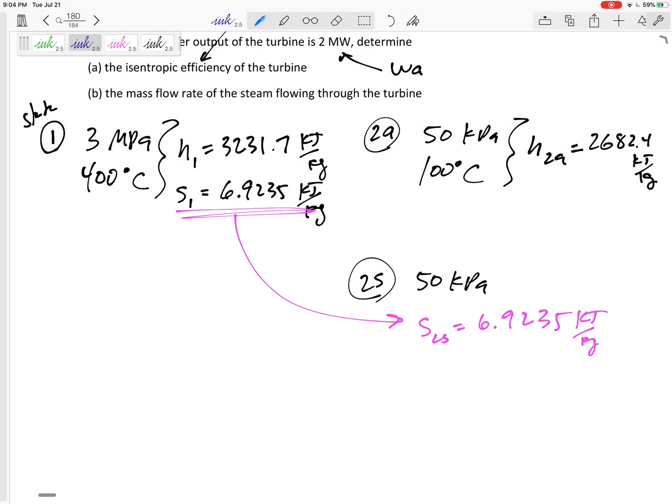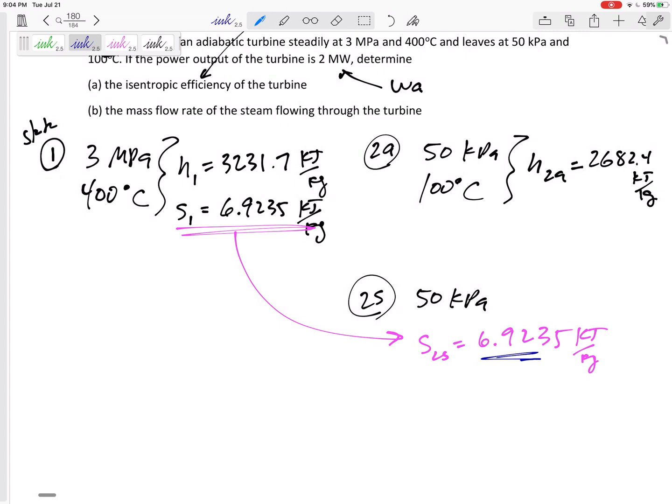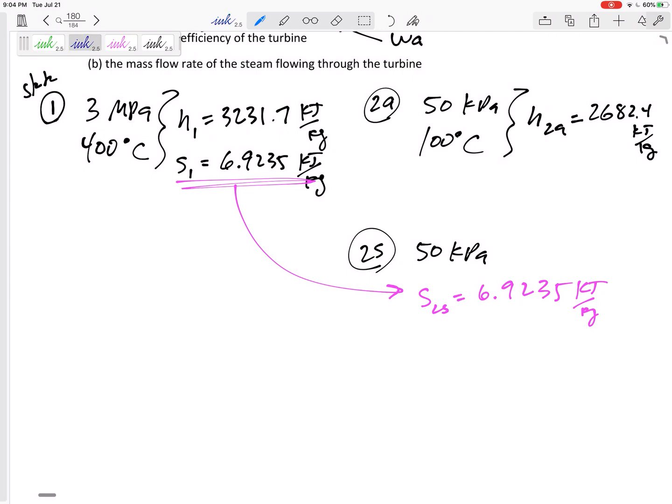It is still 6.9235 kilojoules per kilogram Kelvin. And so now that these are the two properties, I can find any other property that I want. So now I want to find the h. Well, if I tell you the pressure and I tell you the entropy, I would head to table A5 and see if this entropy is between sf and sg. If it's higher than sg then it's superheated. If it's lower than sf then I'd go to the subcooled or compressed liquid tables. This one, if we look, I do see that it is between sf and sg for that pressure, so this is a mixture. Let us calculate quality.